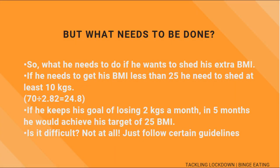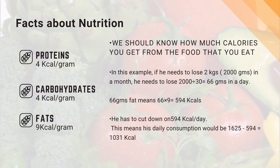So what does he need to do? If he wants to shed his extra BMI and get it below 25, he needs to lose at least 10 kilograms, which would give him a BMI of 24.8. Setting a goal of losing 2 kilograms a month, in five months he would achieve his target BMI of 25. Is it difficult? Not at all — just follow certain guidelines.